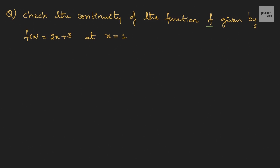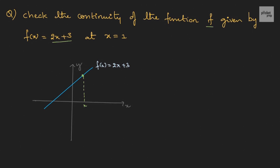Let's try a question: check the continuity of f(x) = 2x + 3 at x = 1. The best way to understand continuity is to draw the graph. From the graph of f(x) = 2x + 3 at x = 1, we can see there is a left-hand side, a right-hand side, and the value exists — all three are equal. So we write: limit as x tends to 1 of f(x) = 5, and f(1) = 5. Since both are equal, the function is continuous.